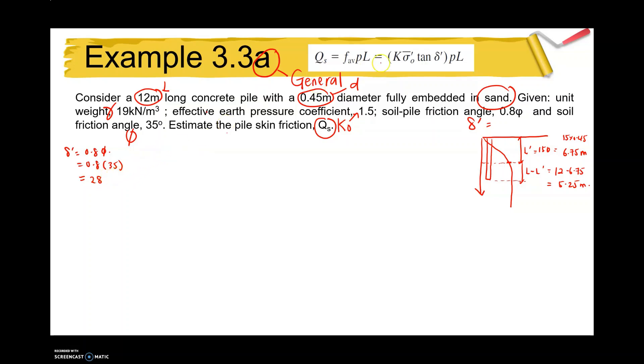Then the unknown value is P, the perimeter. The perimeter is pi D, so our pi D equals 1.41 meters squared.